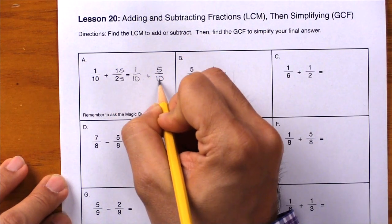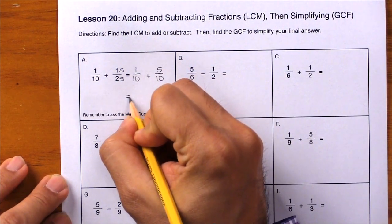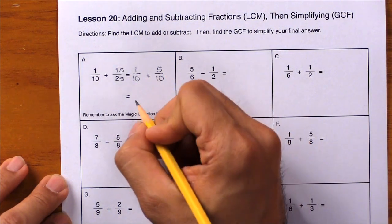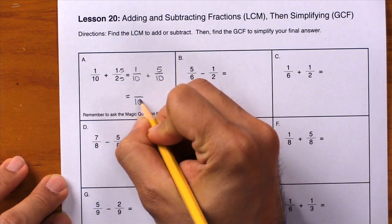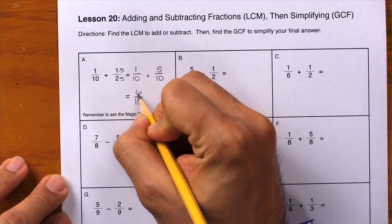Next line, just like apples plus apples give you apples, tenths plus tenths give you tenths. How many tenths? We have 6/10. So it looks like we're done, but we have one more step to do, which is to simplify our final answer.